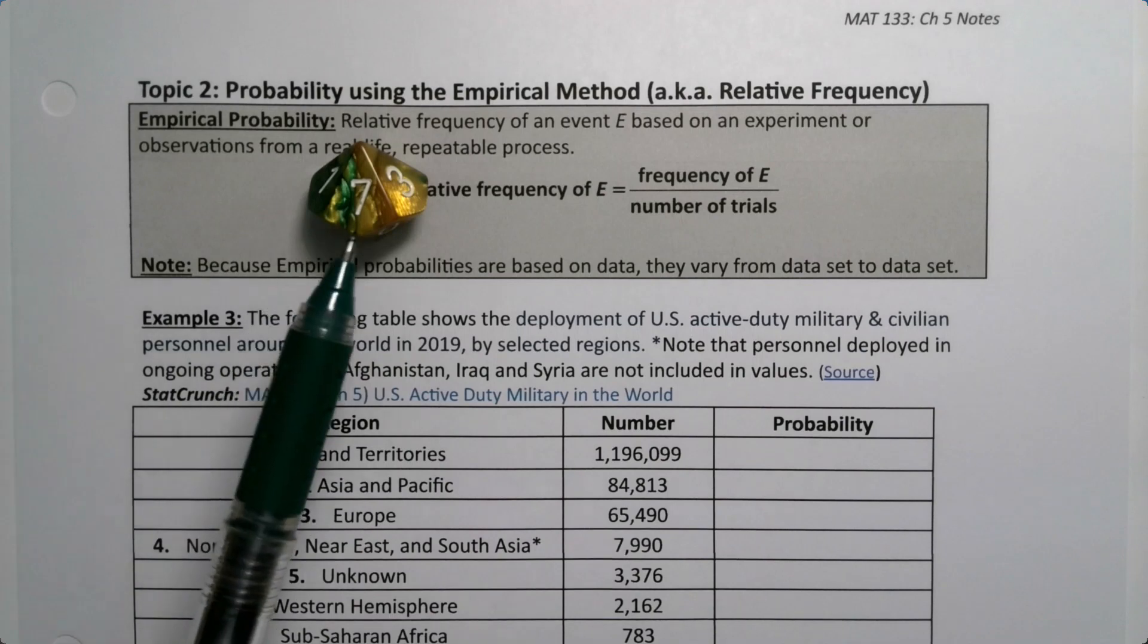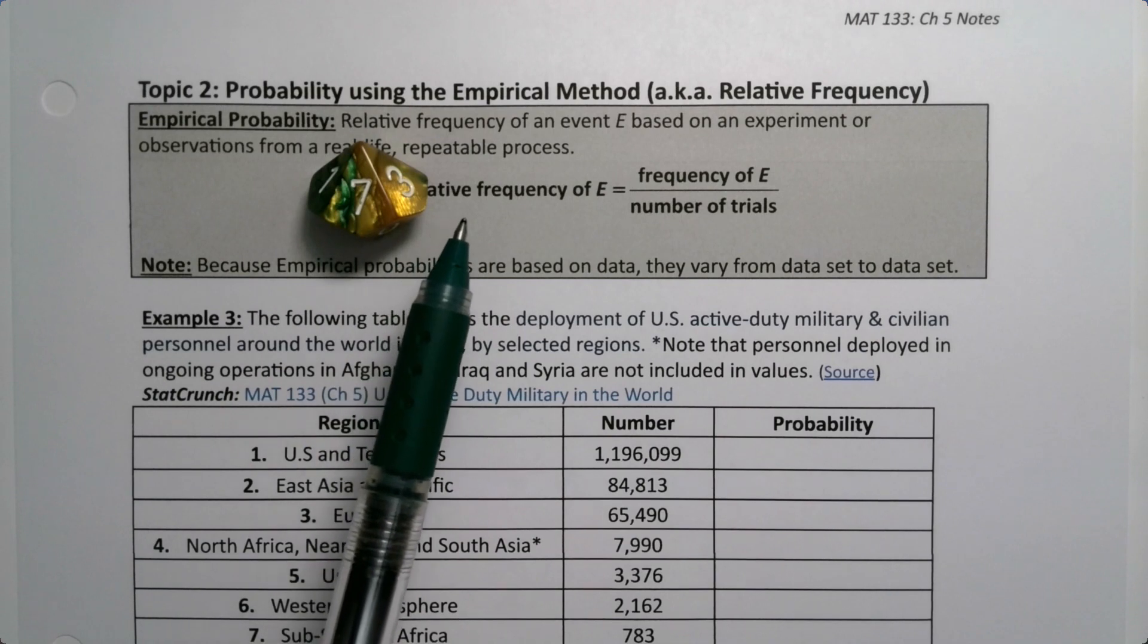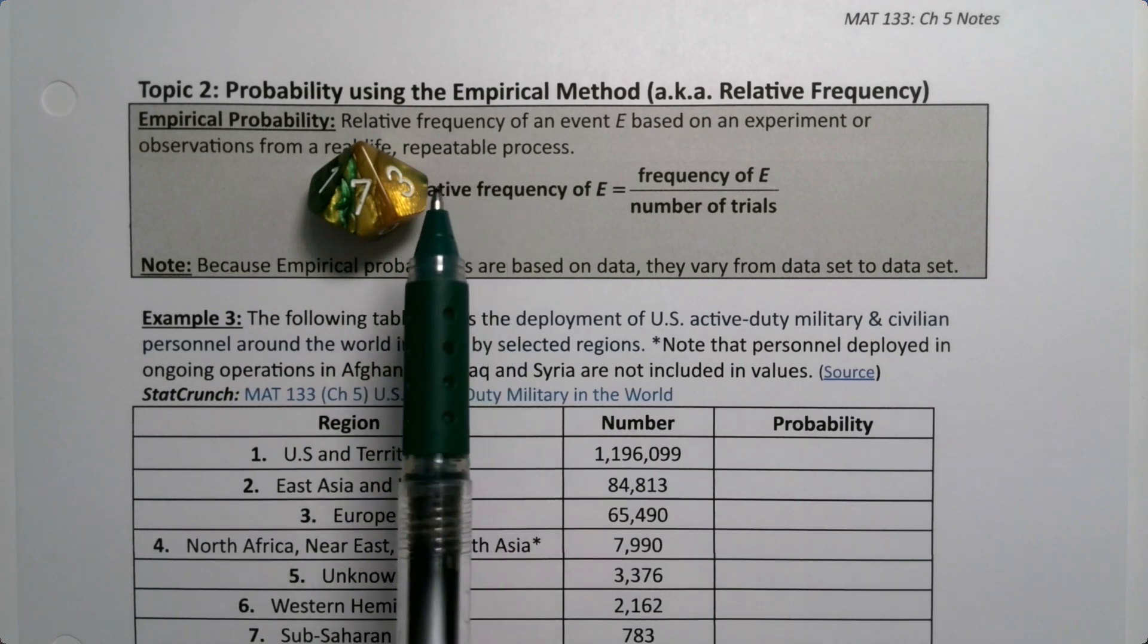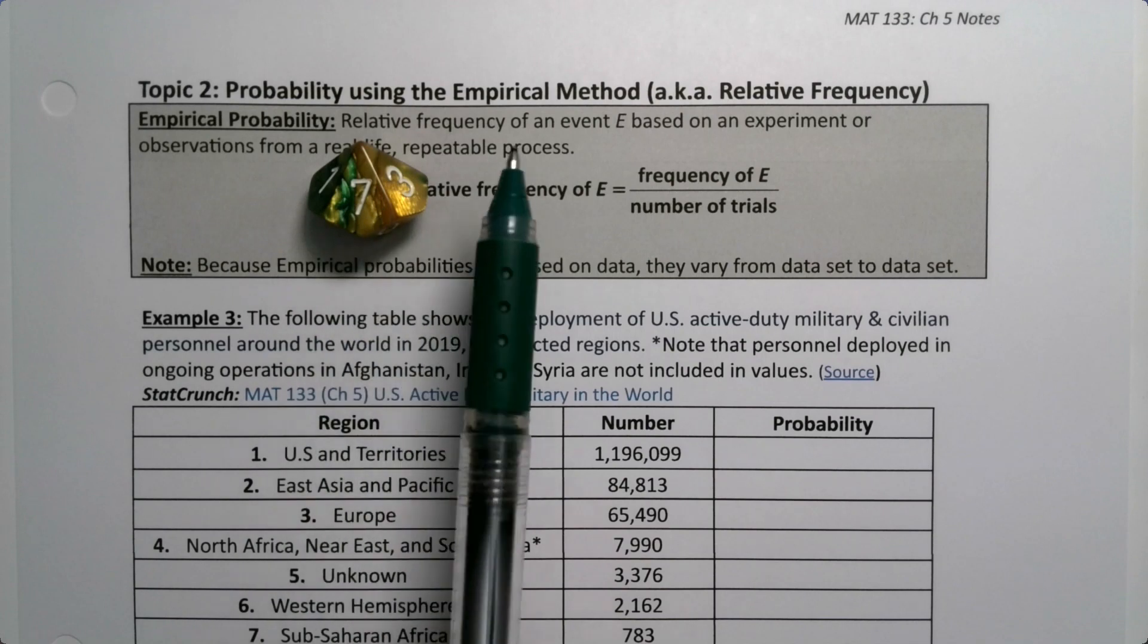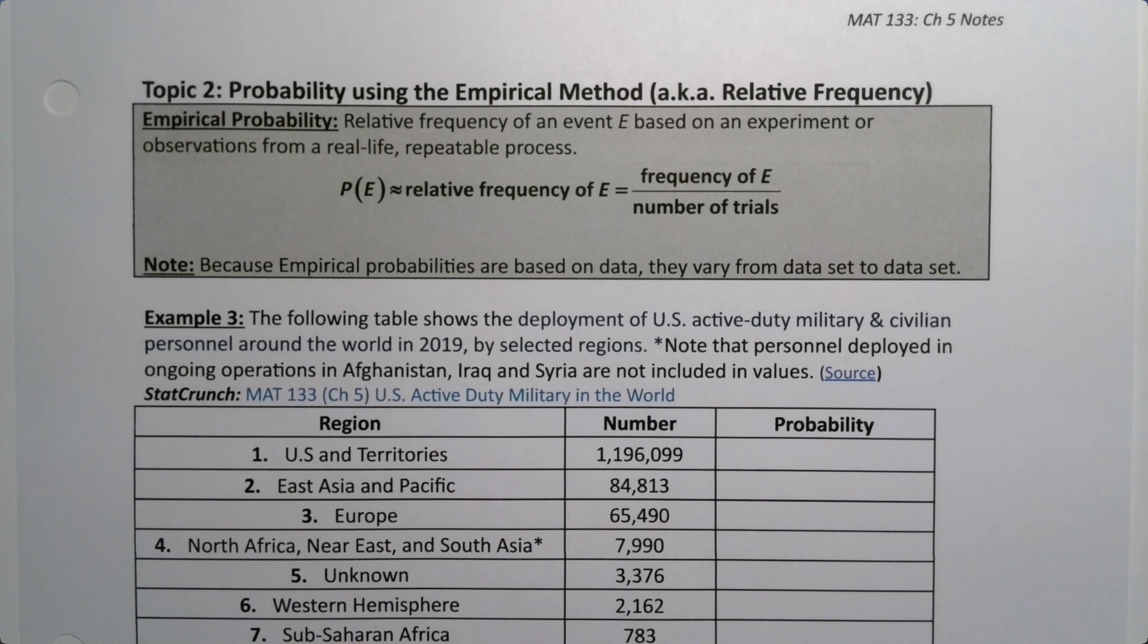Our first examples involving my die and the roulette wheel we did mainly based on gut instinct because they're so easy we can kind of just imagine how they're going to work. But we need more advanced techniques for finding probabilities. Now the first one we're going to use is called the empirical method.